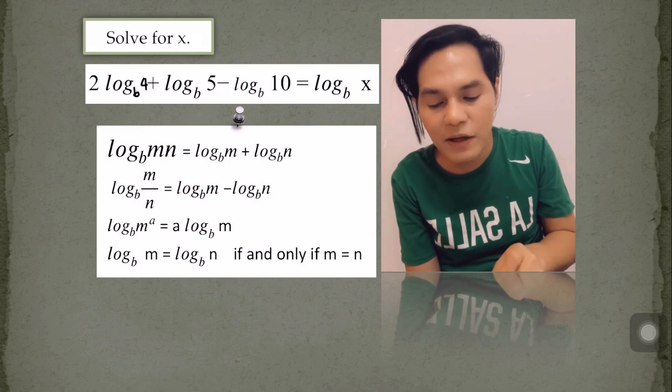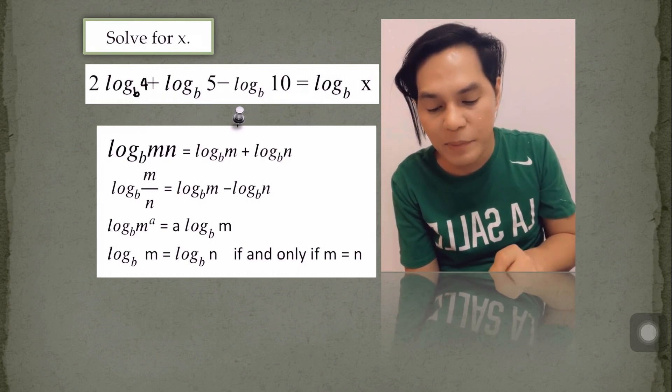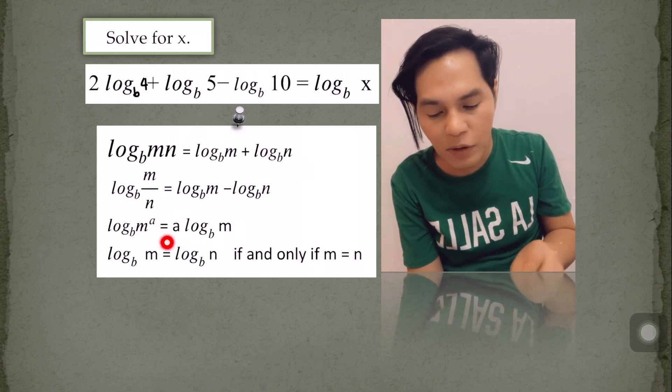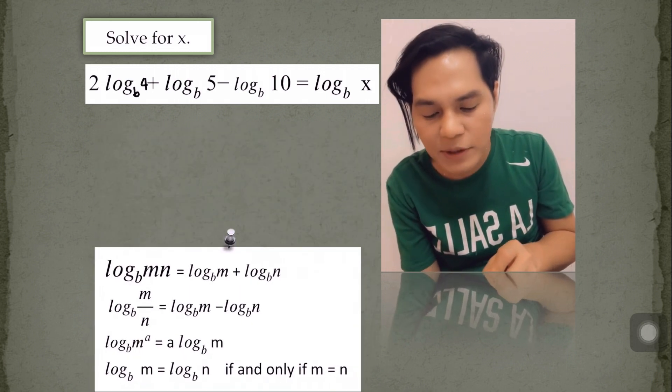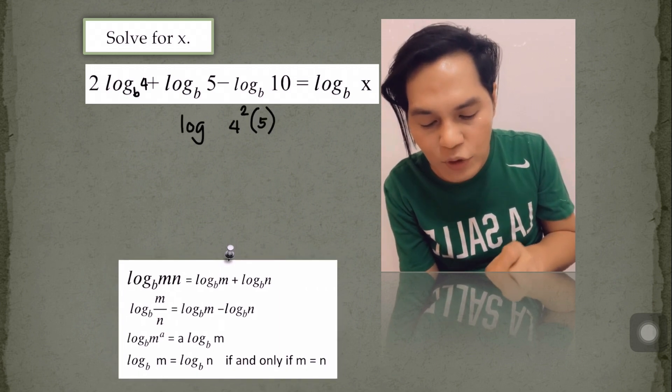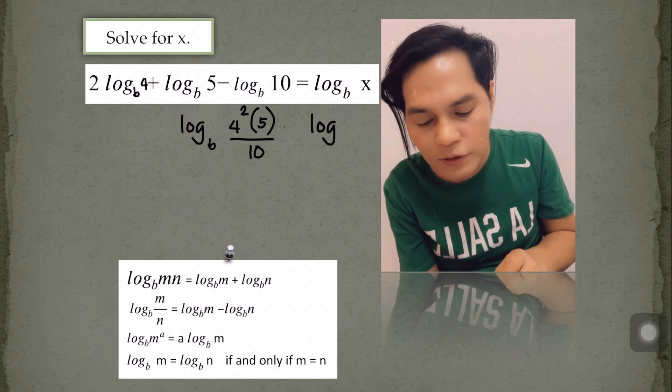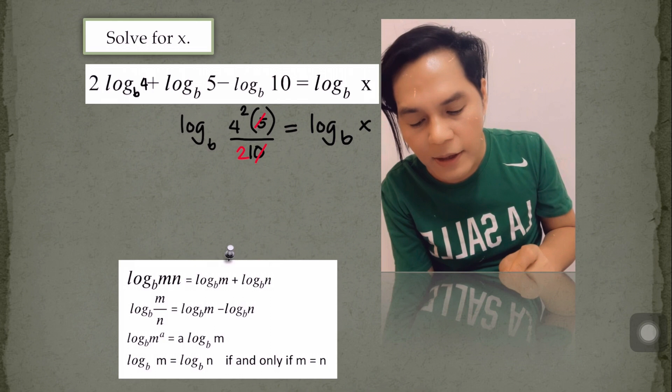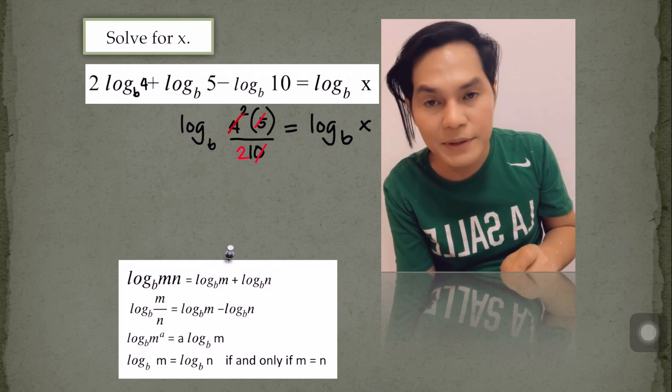Can we look at the first equation here? So this left side of the equation is in three terms. We are going to express this one into a single form by simply applying the laws of logarithm. So the 2 here becomes the power of 4. And then from addition to multiplication, from subtraction to division. And then we simplify. 5 and 10 becomes 2, and then 4 squared, 16 divided by 2, that becomes 8.